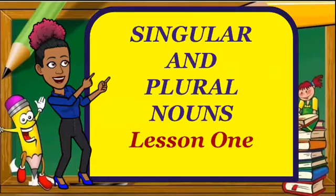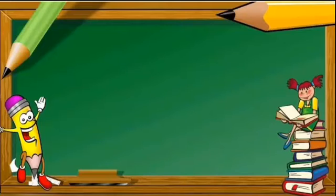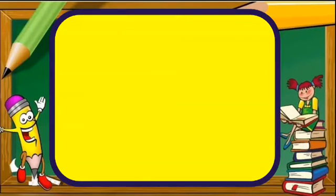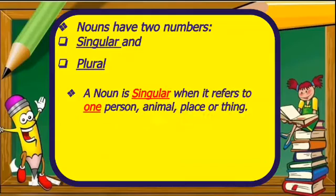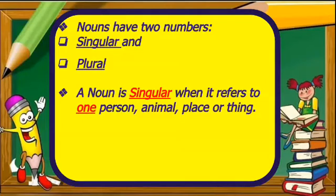Singular and Plural Nouns, Lesson 1. Nouns have two numbers: singular and plural. A noun is singular when it refers to one person, animal, place or thing.